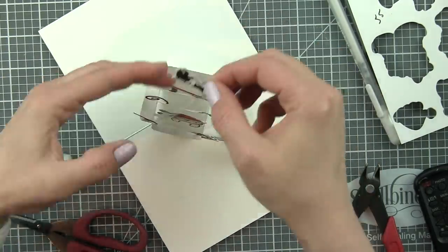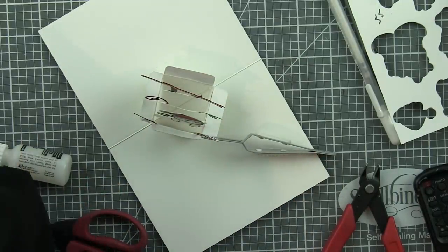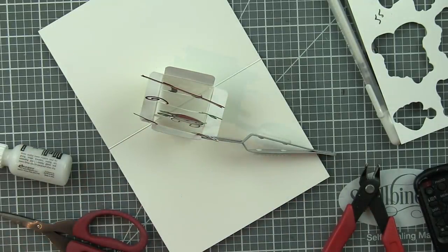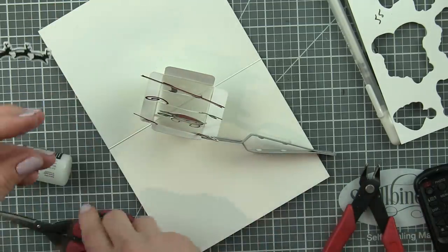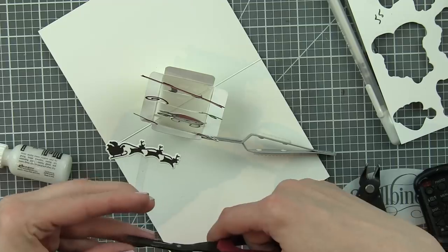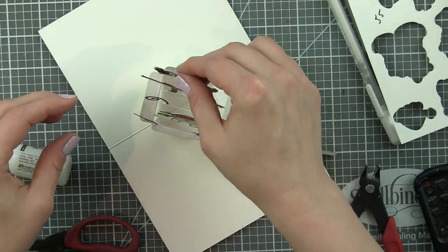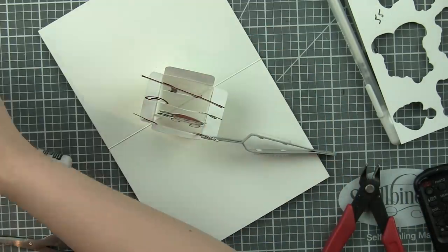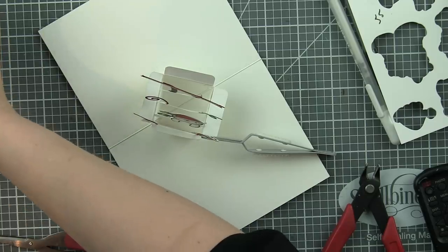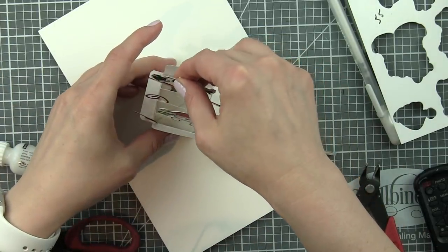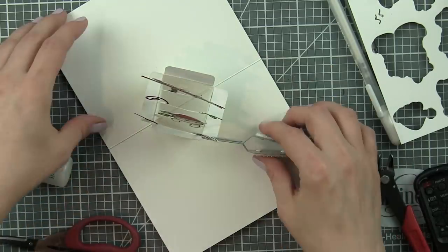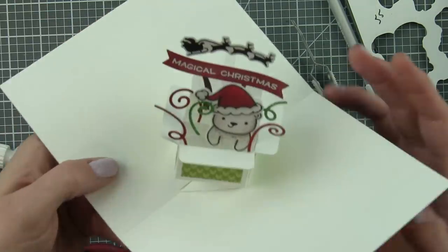So these aren't really a product you can buy. But if you have any acetate like this or something left over from packaging, give it a try. I love using these because I think it works really well. And I want it just to stick up high enough that it sticks up above the Magical Christmas banner. And it's secured to that little insert.